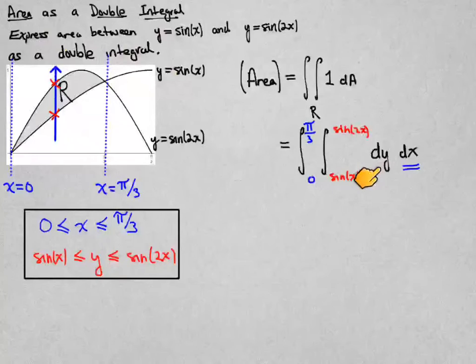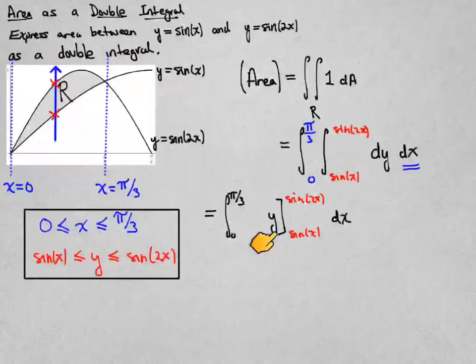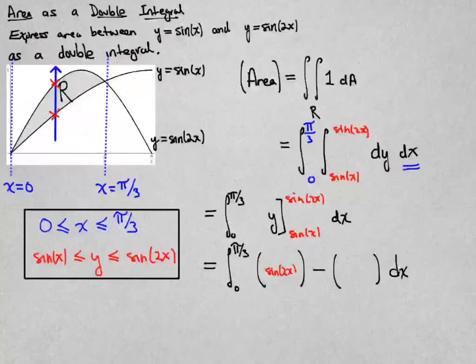We integrate first with respect to y, and the function we're integrating is 1. So I'm going to get a linear expression evaluated between the two sine curves. I then put in those two values for y and subtract.